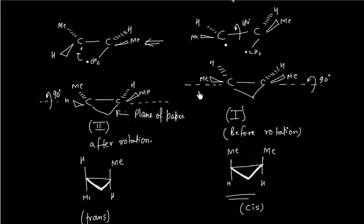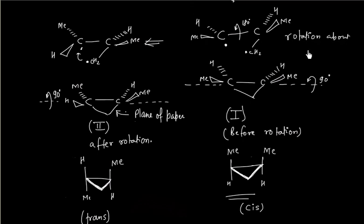In this lecture, we discussed that addition of singlet carbene is stereospecific — it gives only one isomer. But addition of triplet carbene is not stereospecific; it gives both cis and trans products. The main reason for two products in the triplet case is rotation about the single bond.